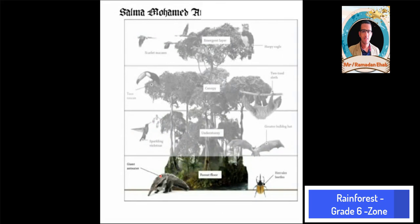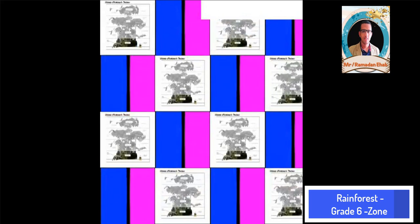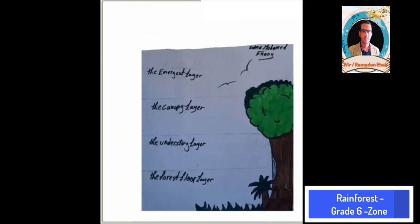Fourth and the last layer is the forest floor. It is dark and quiet. It's covered with leaves, seeds, and branches that have fallen from the trees. After explaining each layer in the forest, I will now show you my drawing of the rainforest and its layers.